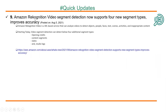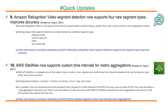Amazon Rekognition, another ML service: Amazon Rekognition video segment detection now supports four new segment types and also improves accuracy. AWS IoT SiteWise now supports custom time intervals for metric aggregations. Existing preset windows are 1 minute, 5, 15, 1 hour, 1 day, and 1 week. With this announcement you can move away from the default UTC time zone — for example, you can use PST time zone and collect something at 12 a.m. every day.